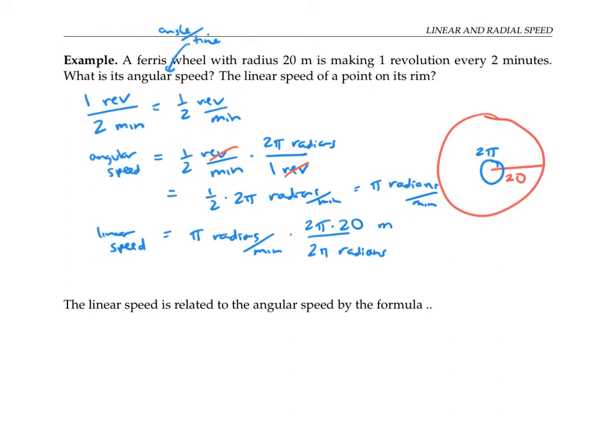The 2π's cancel, as do the radians, and I'm left with 20π meters per minute.